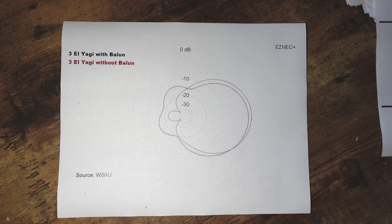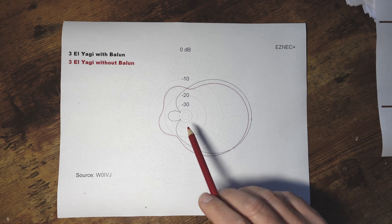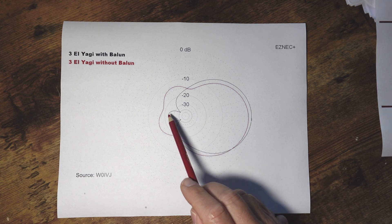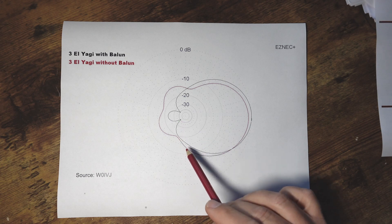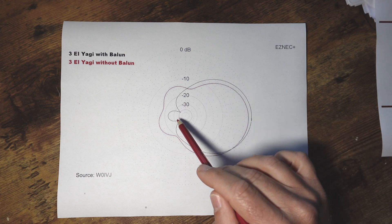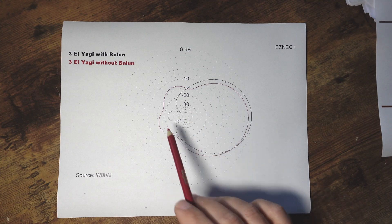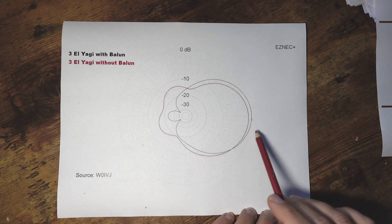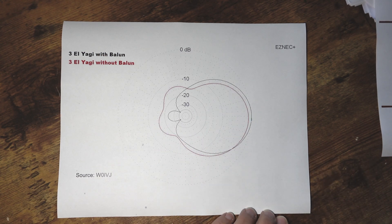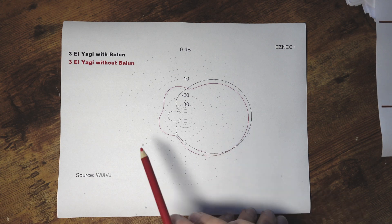So when he says Balun he means a common mode choke. So with a common mode choke for instance you can see that the radiation pattern here in the black is what we expect. A very nice front to back ratio, pretty much it's a simulation so it's perfect in terms of the radiation pattern.